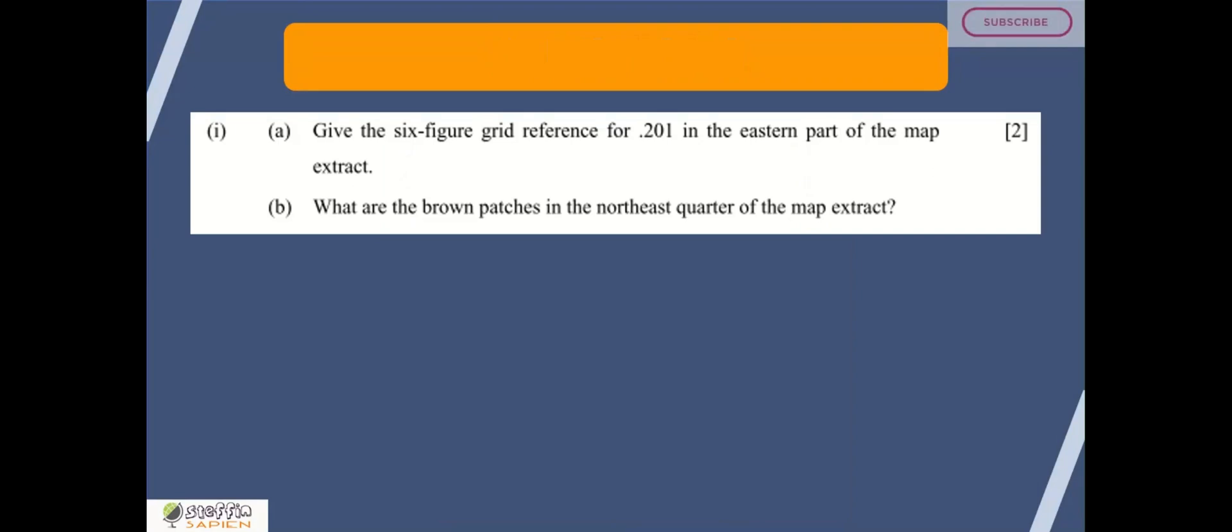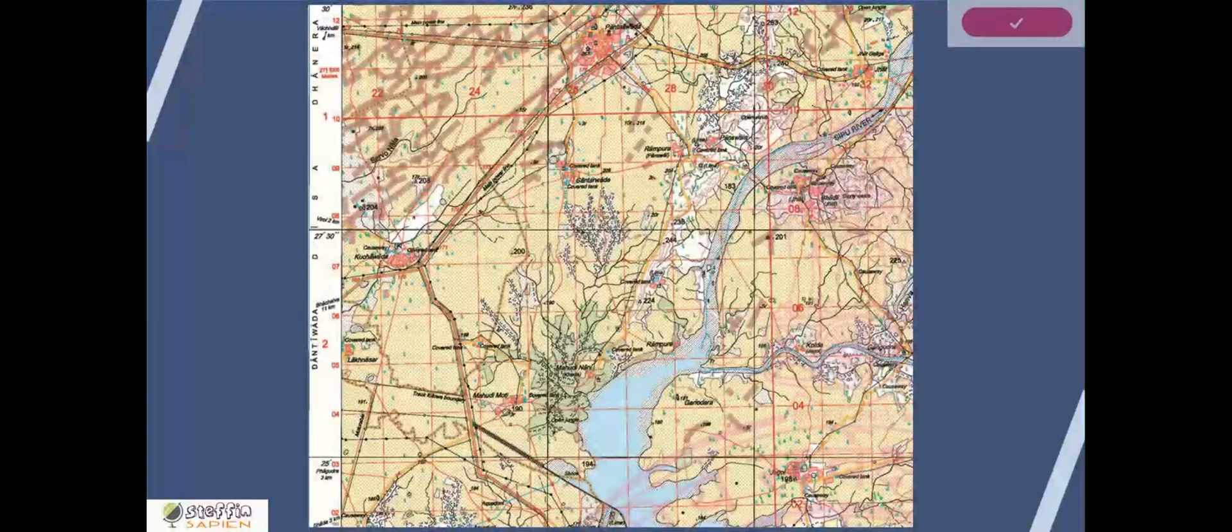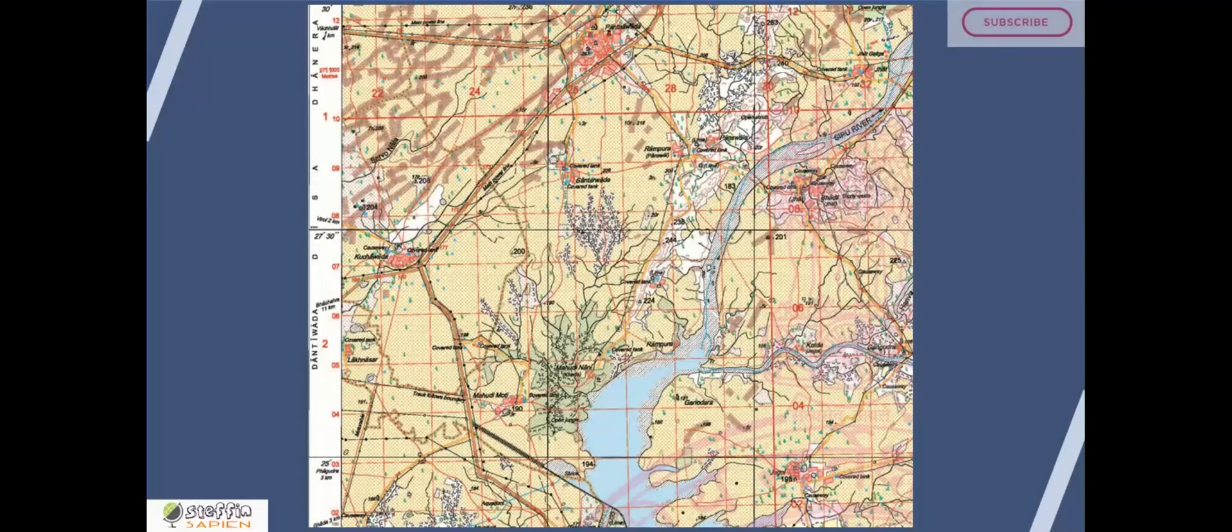First question A: Give the six figure grid reference of spot height 201 in the eastern part of the map extract. Whenever you get a question, make sure you read it two or three times. There can be two 201s, so you should be very specific while looking at the map. Let's have a look at the map. This is the map and first task is to find the location of the spot height 201 in the eastern part of the map and it comes here.